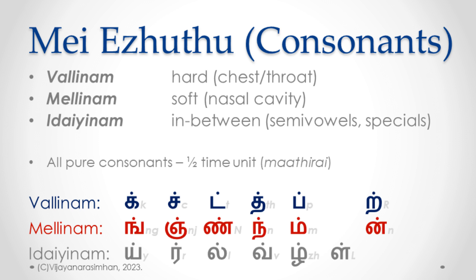The pronunciation follows a beautiful pattern. Whether you say Ka or Nga, the functioning of your tongue, teeth, and palate is similar. But where the airflow vibrates — in the vocal tract or the nasal cavity — determines whether you produce a hard or soft consonant. Tamil grammarians have clustered these hard and soft consonants as corresponding groups.